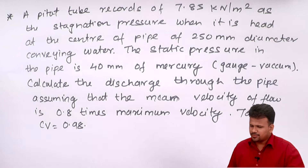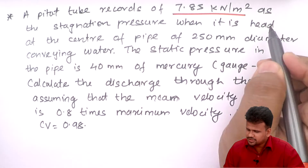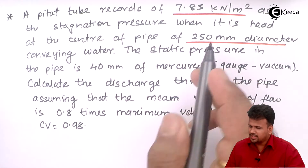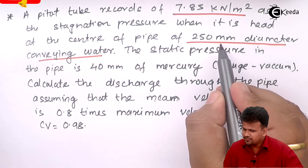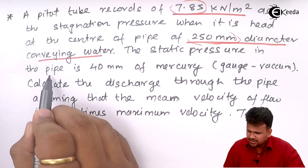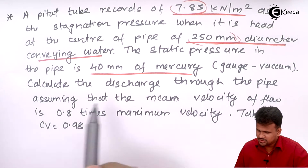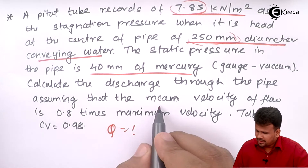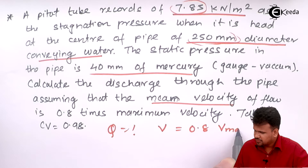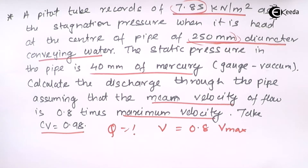A pitot tube records 7.85 kilo Newton per meter square as the stagnation pressure at the center of a 250 millimeter diameter pipe conveying water. The static pressure is 40 mm of mercury as gauge vacuum pressure. We have to calculate the discharge Q, assuming the mean velocity V is 0.8 times the maximum velocity, with Cv equals 0.8.